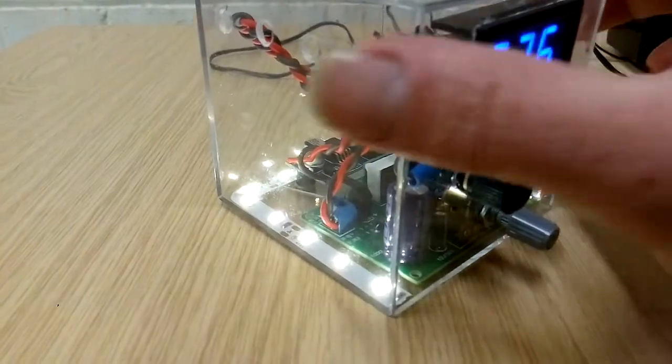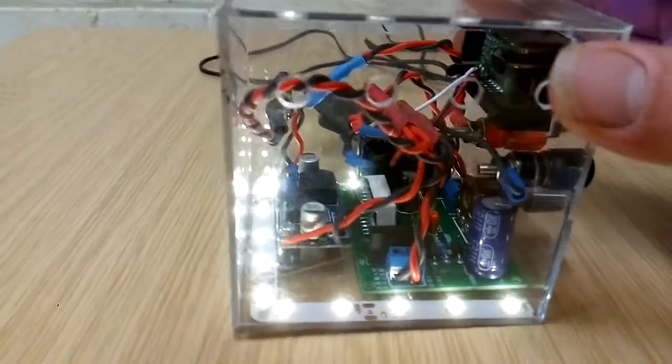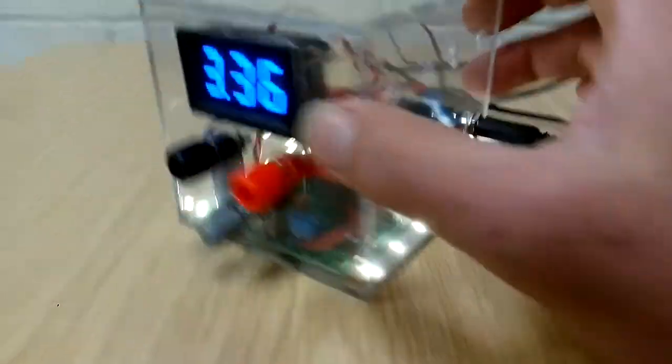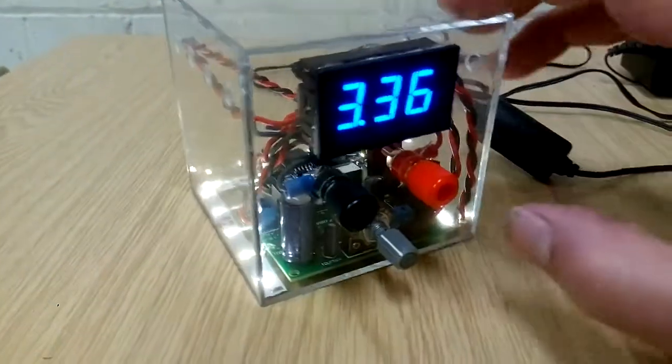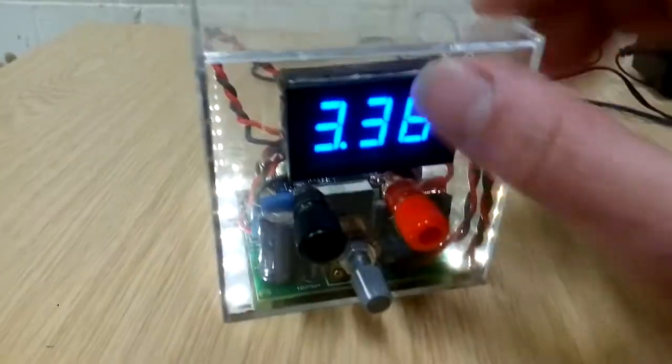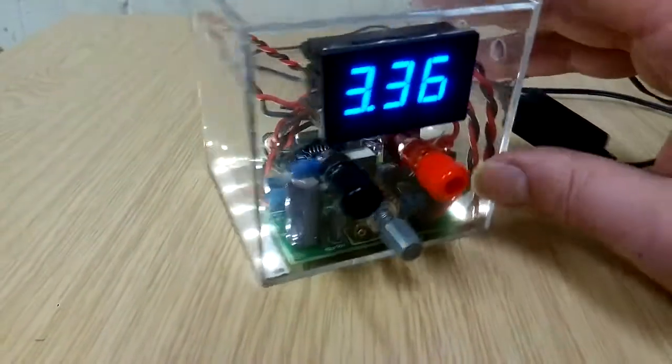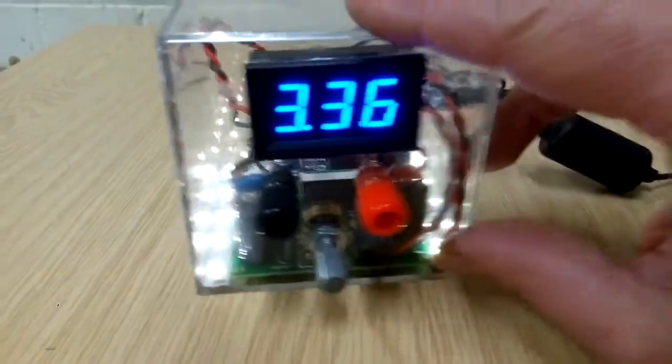Obviously there's no current control on this, but it's not bad for a little bench power supply. Quite cheap. You don't have to put all these whistles and bells all over it - you can just mount it on a piece of wood if you want to. Just a buck converter and a little voltmeter, I suppose. Keep it simple. There you go, thanks for watching.